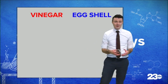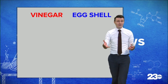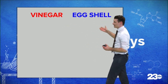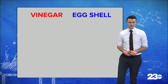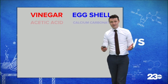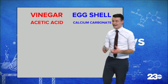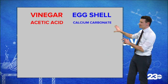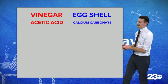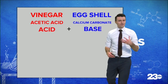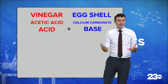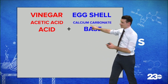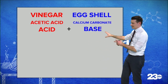It's a pretty simple experiment — there are only two ingredients going into this: vinegar and the eggshell. But we have to break that down a little bit more. Vinegar is made up of what we call acetic acid, and the eggshell is made up of something called calcium carbonate. Acetic acid is what's called an acid, and calcium carbonate is a base.